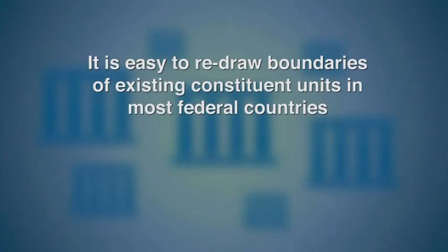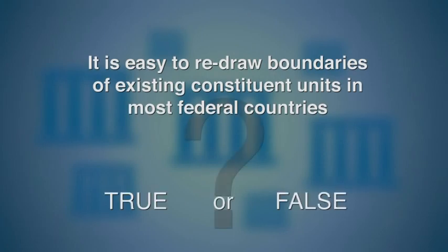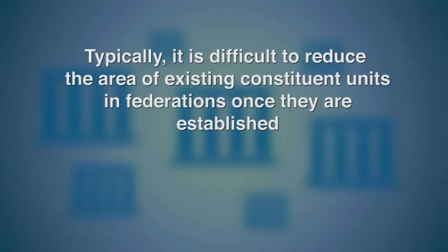Statement five: It is easy to redraw the boundaries of existing constituent units in most federal countries. That is false. Typically, it is difficult to reduce the area of existing constituent units once they are established. Creating new units or expanding them out of territories subject to federal jurisdiction is usually easier.